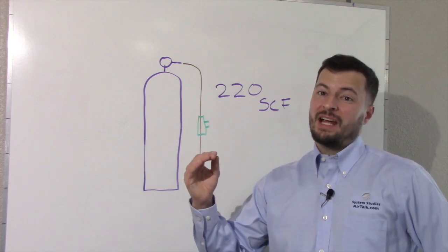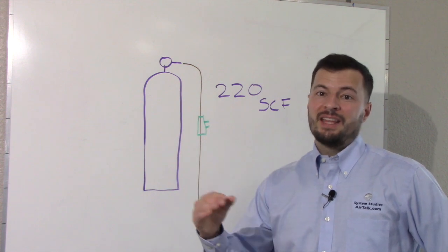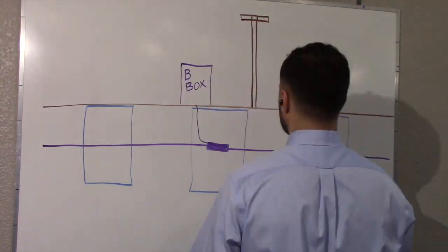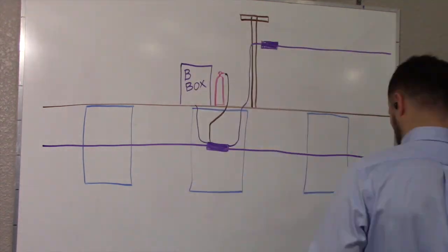If you can get that number down to 1 standard cubic feet an hour, then the tank will last 9 days. Now that we have found our worst tank, we can leak locate. Here's a hint. The biggest leaks are the easiest to find.